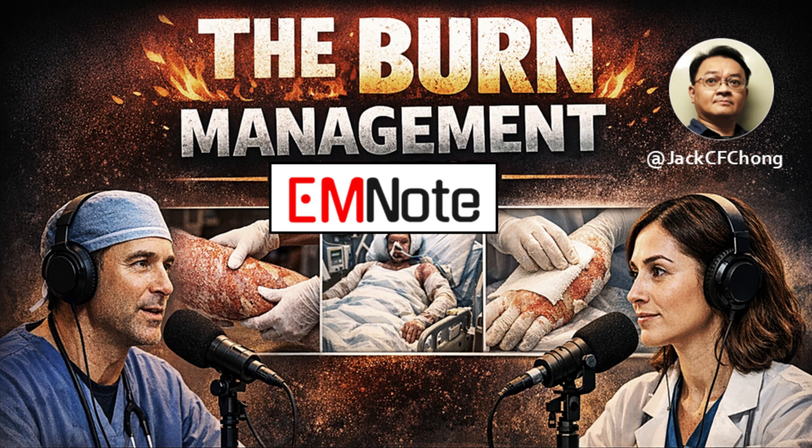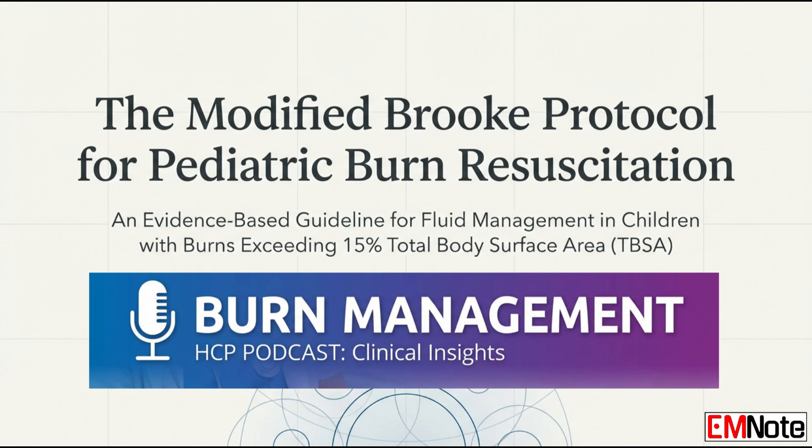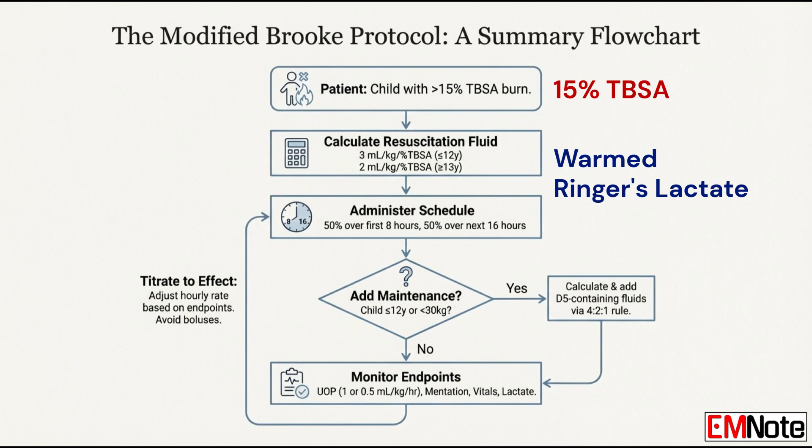Let's unpack this. We're exploring pediatric burn resuscitation, and the numbers here are everything — information that is absolutely essential for any team managing acute burn injuries in kids. What exact patient threshold tells us we have to stop, pivot, and use the modified Brooke approach? We initiate the modified Brooke protocol for any child with burns exceeding 15% of their total body surface area. 15% — that is the non-negotiable threshold. Once you cross that 15% mark, this more conservative strategy has to begin.